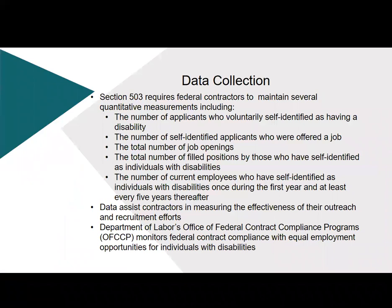Section 503 requires federal contractors and subcontractors to maintain several quantitative measurements, including: the number of applicants who voluntarily self-identify as having a disability; the number of self-identified applicants who were offered a job; the total number of job openings; the total number of filled positions by those who self-identified as individuals with disabilities; and the number of current employees who have self-identified, collected once during the first year and at least every five years thereafter. This data helps contractors measure the effectiveness of their outreach and recruitment efforts.